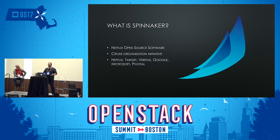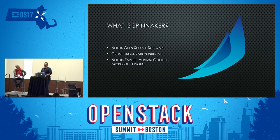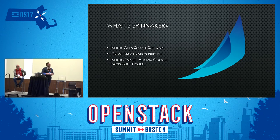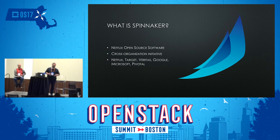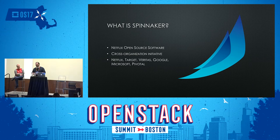Right out of the gates: what is Spinnaker? Very simply put, Spinnaker is a project that was developed by Netflix as a replacement to their prior solution, which was known as Asgard. Asgard enabled teams within Netflix to deliver to AWS in a way that pretty much hadn't been done before — it facilitated their mechanism for continuous delivery.